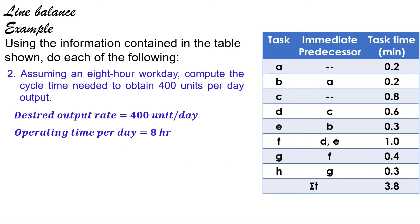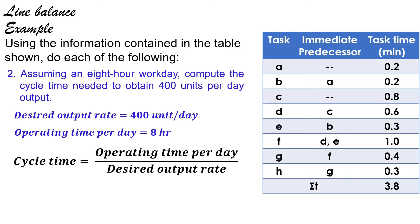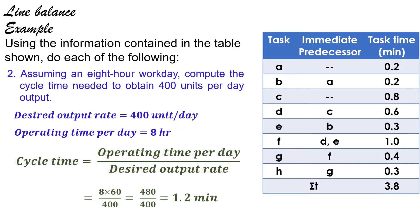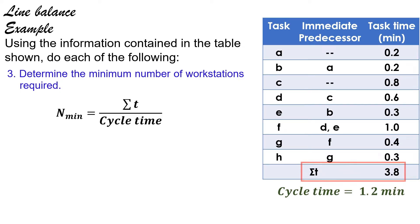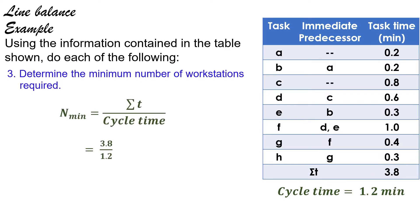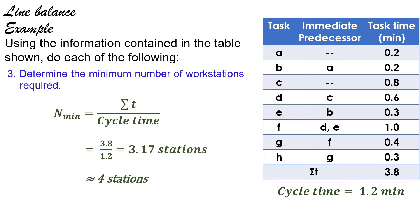The second question is to find the cycle time required to produce 400 units daily in 8 hours. The cycle time equals the operating time per day divided by the desired output rate. So, it equals 8 multiplied by 60 to convert hours to minutes, divided by 400, which equals 480 divided by 400, equal to 1.2 minutes. The third question is to find the required minimum number of workstations, which equals sigma t divided by the cycle time. It is given that sigma t equals 3.8. So, n minimum equals 3.8 divided by 1.2, which equals 3.17 stations.